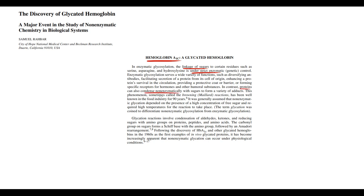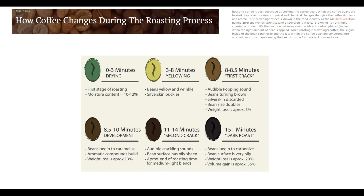This non-enzymatic binding of sugars to proteins we call glycation, and glycation is possible only due to the browning reaction. When glucose binds to hemoglobin, which is a protein, this process is called non-enzymatic glycation, and this reaction results in the formation of glycated hemoglobin.